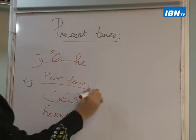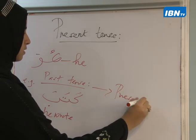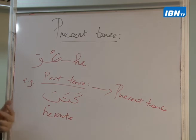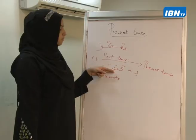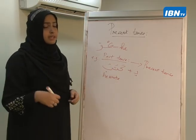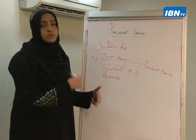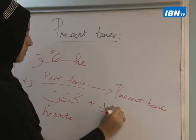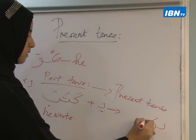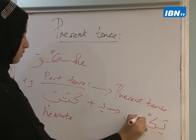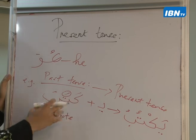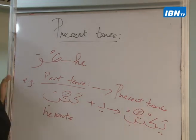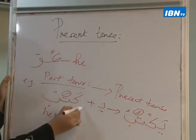Now I want to change kataba into present tense. What we did was we added a ya at the beginning — because according to the ruling of the Arabic grammarians, we add it at the beginning of the verb. So kataba becomes yaktubu. You also notice that the vowel on the ta has changed from accusative to nominative.